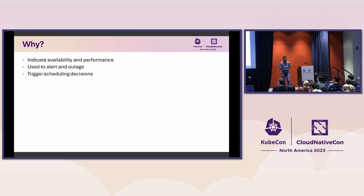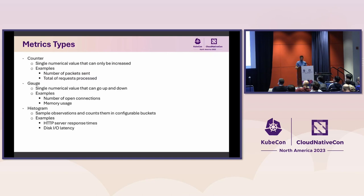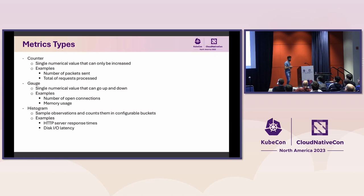Another thing we can use metrics for is to perform trigger scheduling decisions — so if we need to allocate more resources for our system, or maybe we have too many resources and need to remove some. There are different kinds of metrics. The first and simplest to understand is the counter: a numeric value that can only go up. We can use counters to represent the number of packets being sent on a system, the total number of requests being processed, and so on.